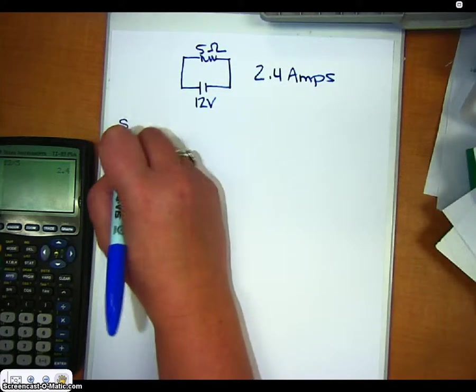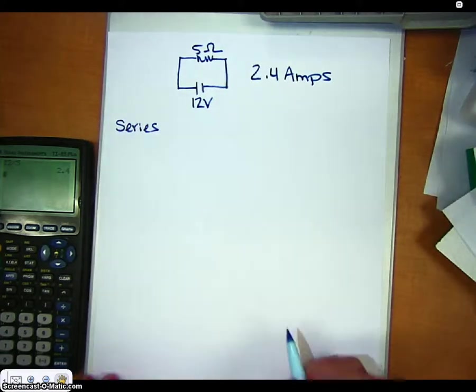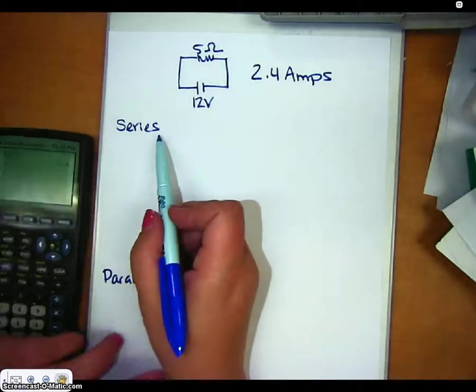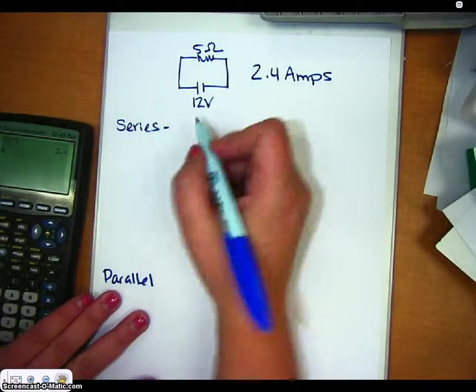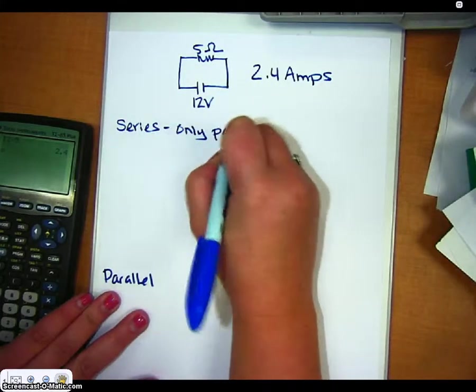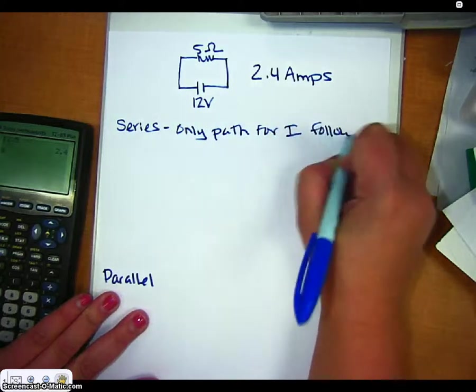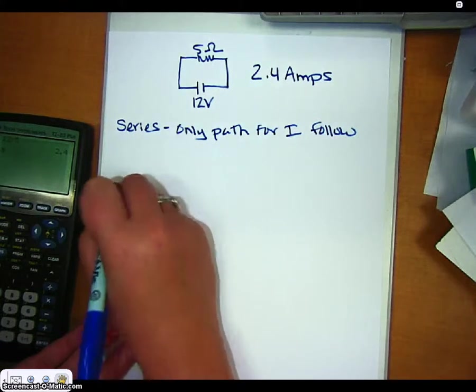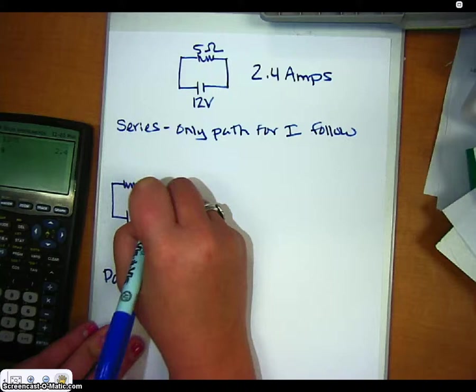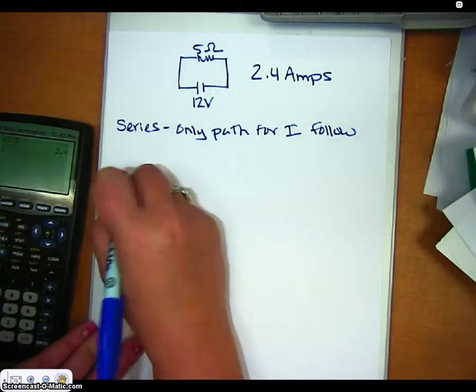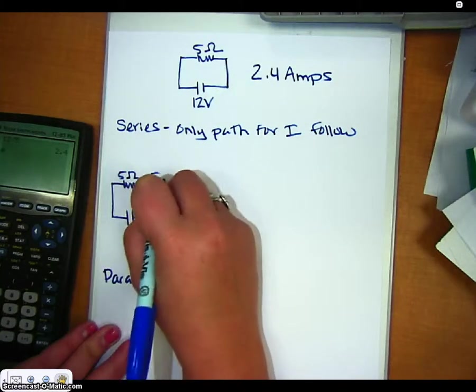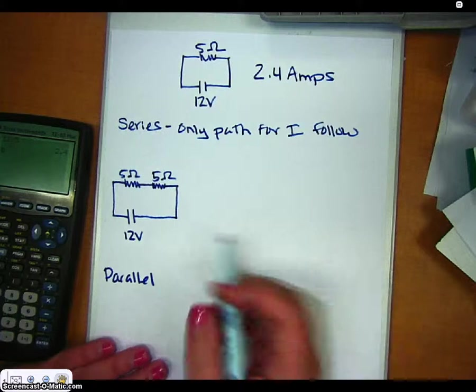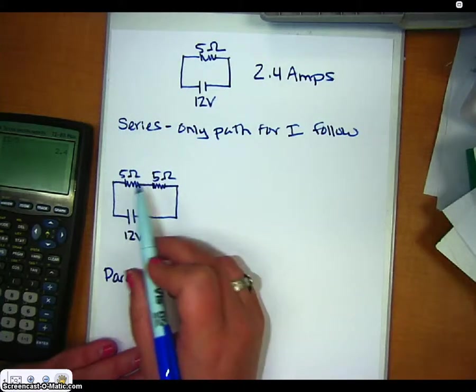And so the two ways that we can organize resistors are in series or in parallel. So if I did put two resistors in series, there is only one path for the current to follow in this example. So if I were to add one more resistor and I would put it in series, the current would only have one path to follow and I'd have a 5 ohm and a 5 ohm and let me just keep the same voltage so we can actually see what happens when you put two in series. So you only have one path for the current to follow.